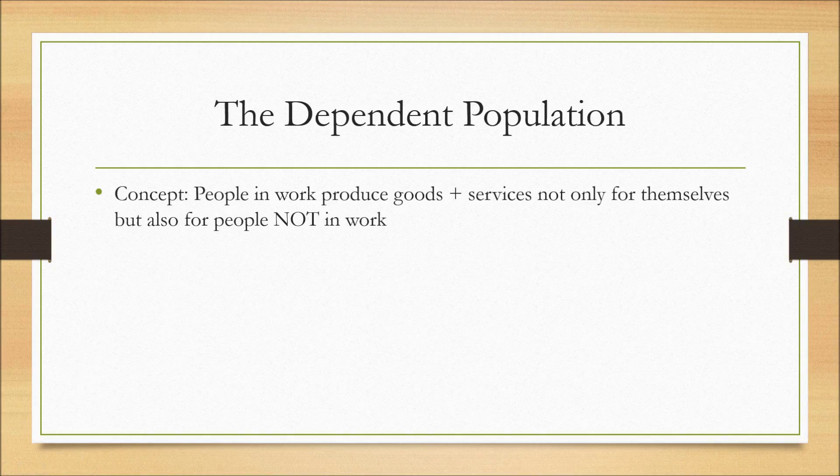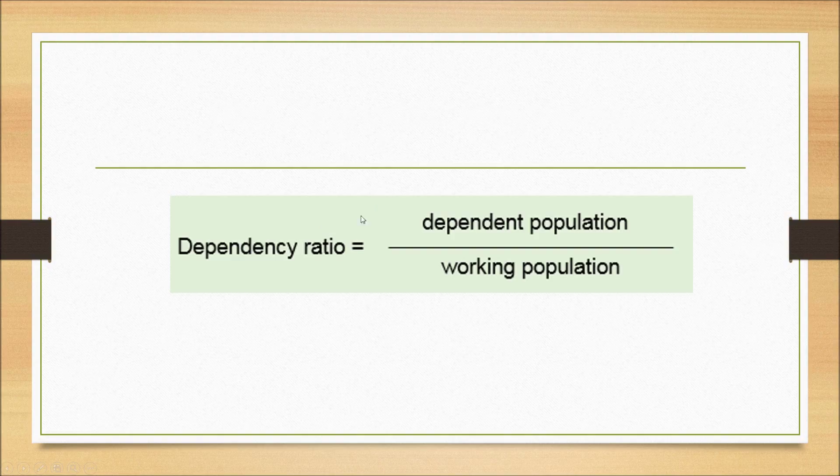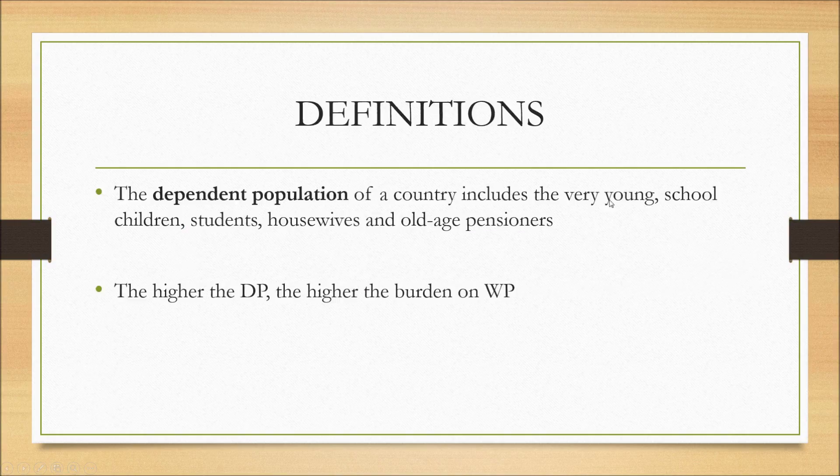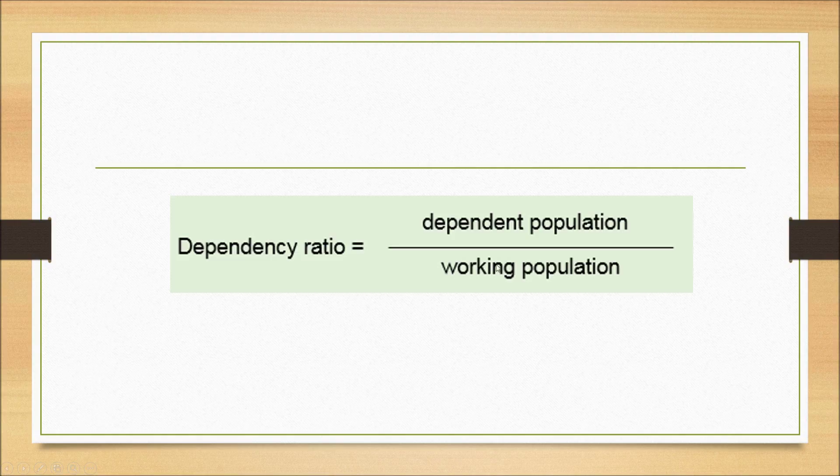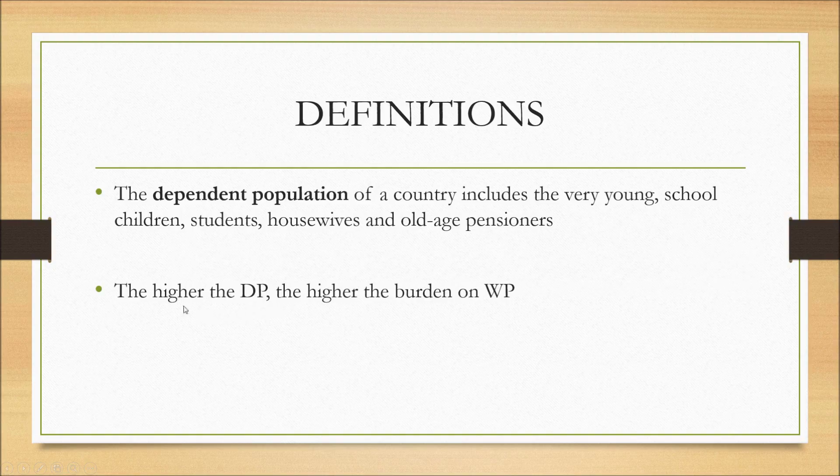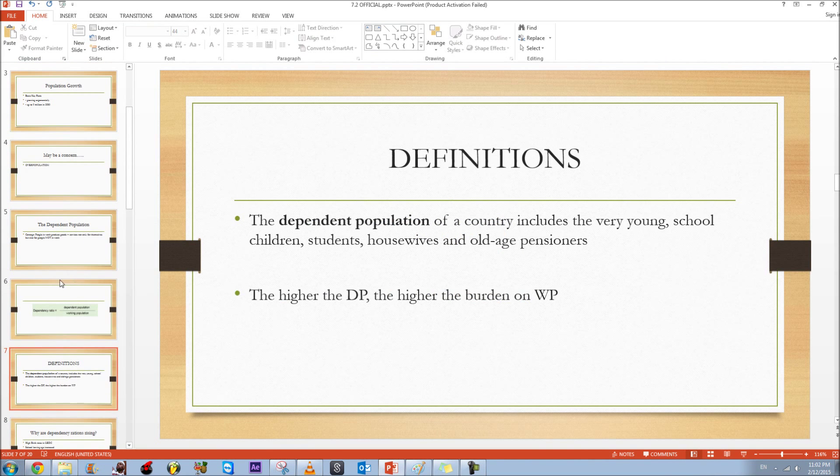So we can introduce the dependency ratio here which is the dependent population. And this includes the very young, school children, students, housewives, and old age pensioners. And this is divided by the total working population, people who are willing and able to work. So the higher the dependency ratio, the higher the burden on the working population.